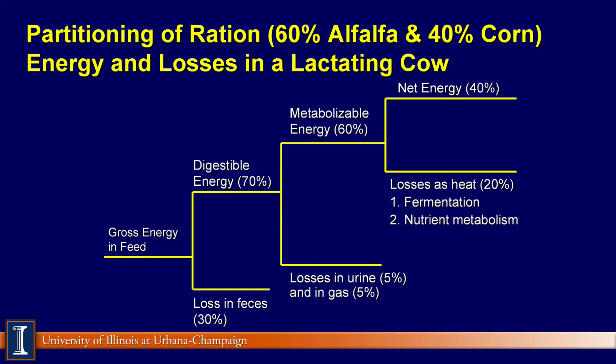Finally, once we go from metabolizable energy (ME), we go to something called net energy (NE). Once we pay all our 'taxes' — taxes of manure, urine, and gases — we have net energy, and that's about 40% of the total, which means the animal can then use that for some function.